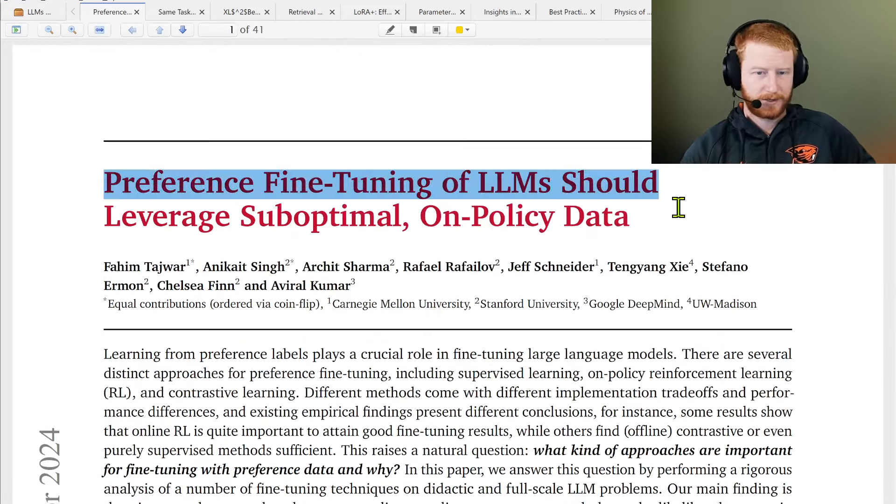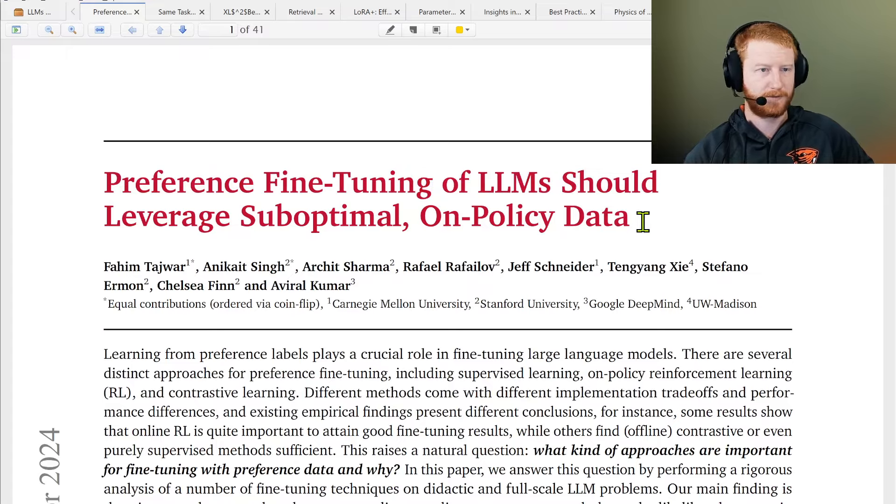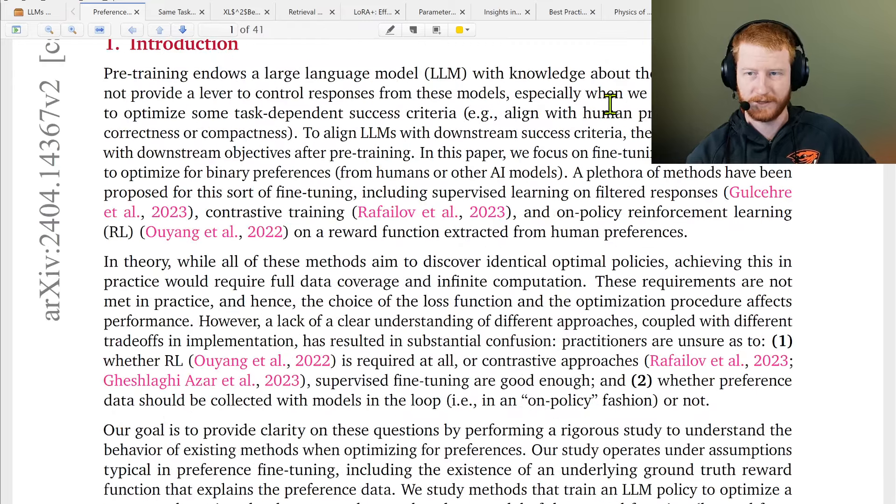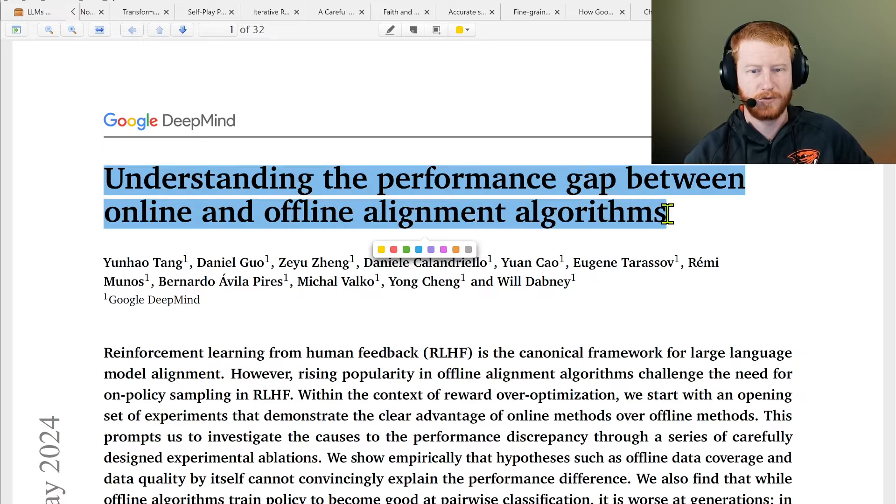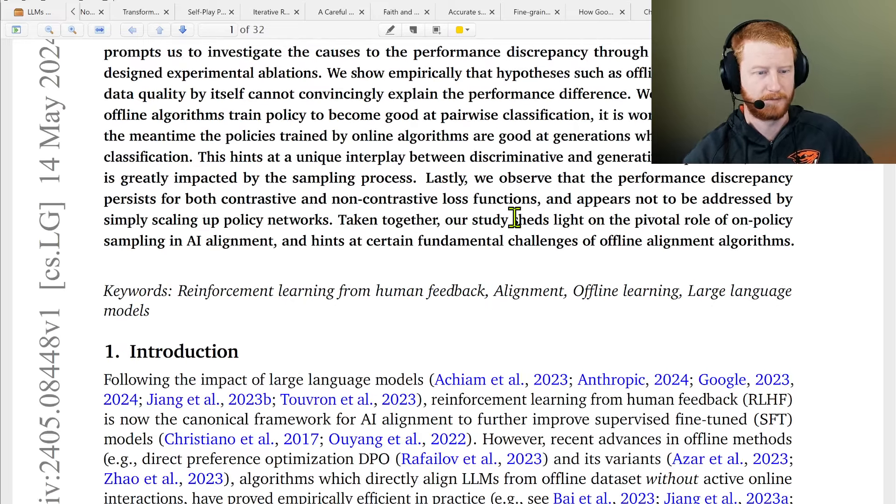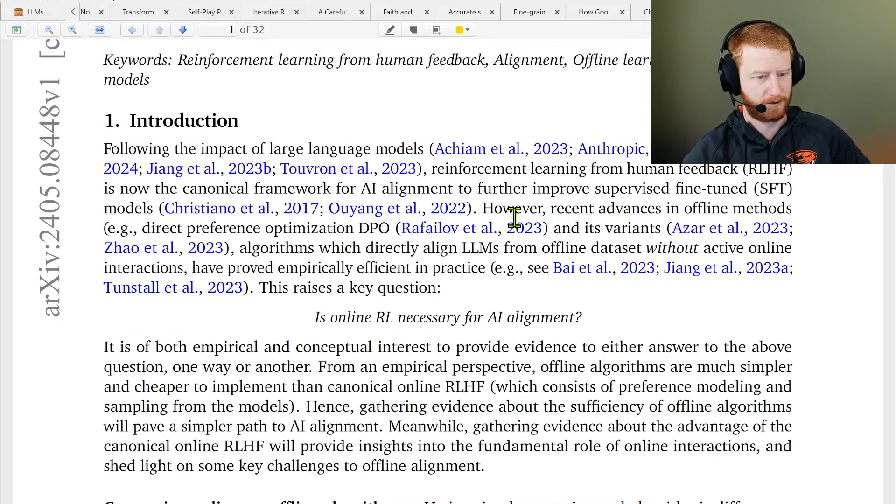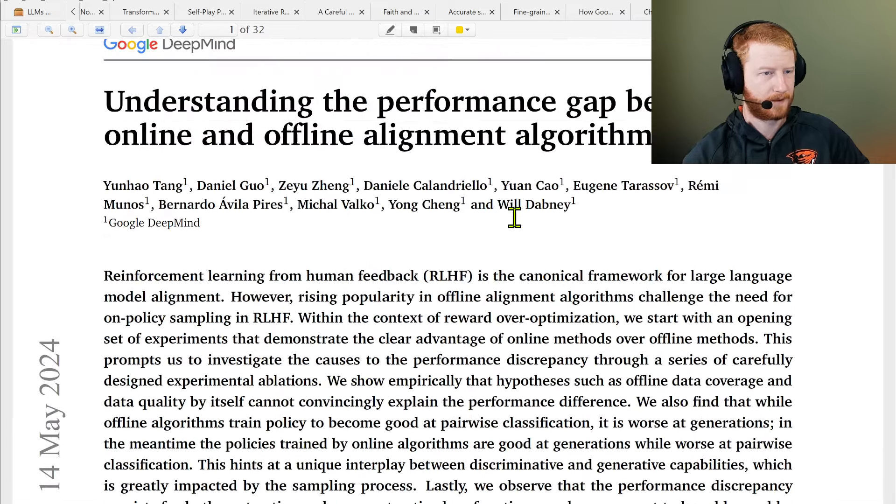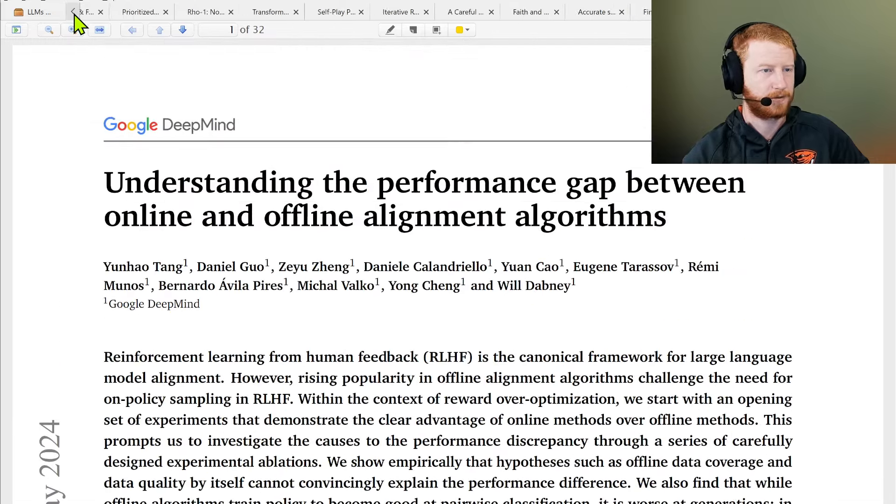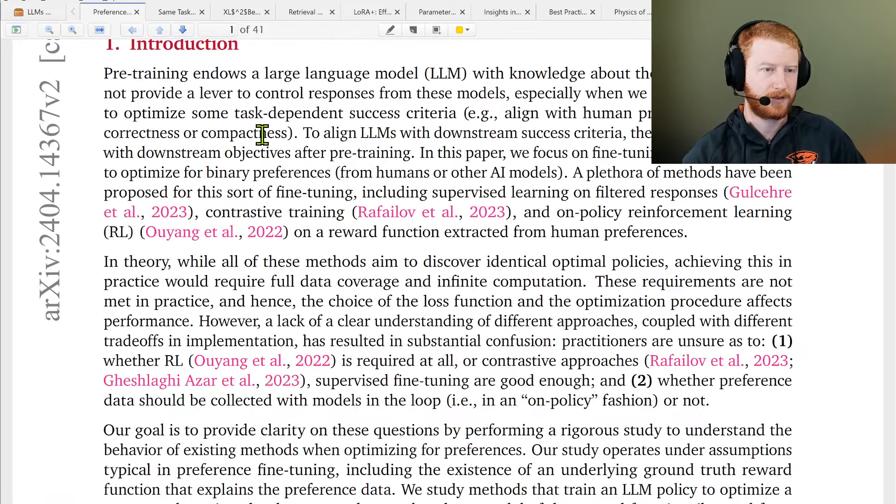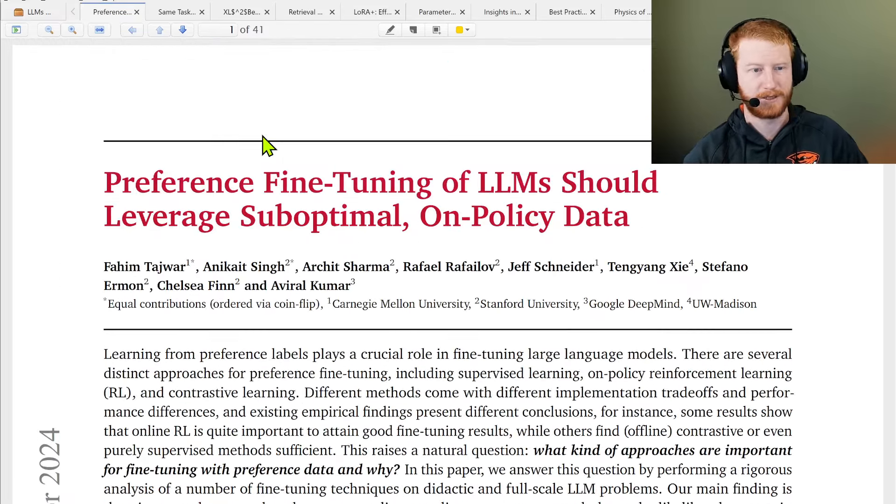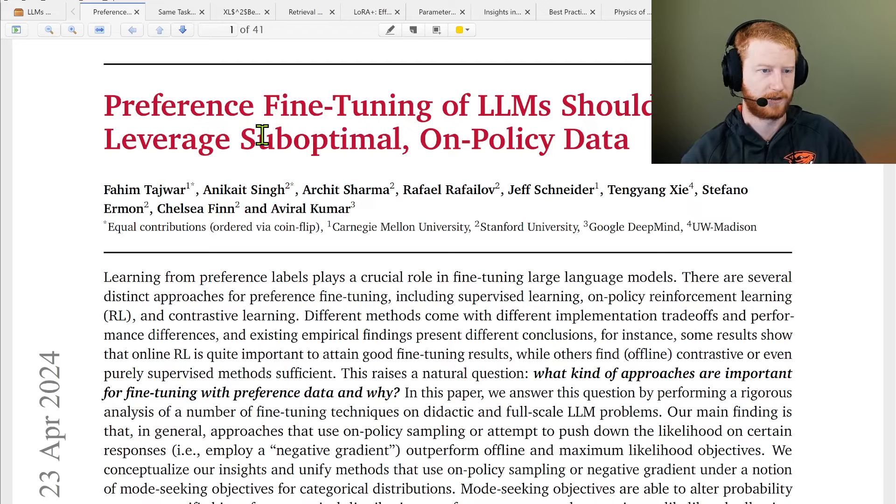Next one - preference fine tuning of LLMs should leverage suboptimal. This is one of a number of papers basically saying the same sorts of things. I think there might be one more recent in here from Google. We have these two warring factions - the more traditional RL-inspired PPO, etc., and then we have these DPO approaches where we can use preference pairs or something like that.